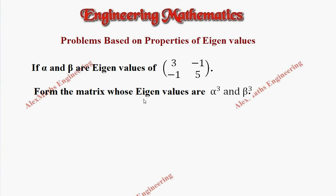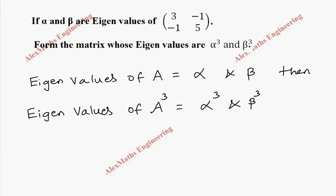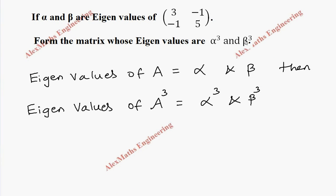they are asking to form the matrix whose eigenvalues are alpha cube and beta cube. Suppose there is a matrix A whose eigenvalues are alpha and beta, then eigenvalues of the matrix A cube will be alpha cube and beta cube. So if we find A cube, then that will have the eigenvalues alpha cube and beta cube.